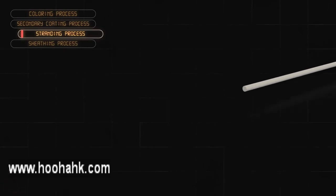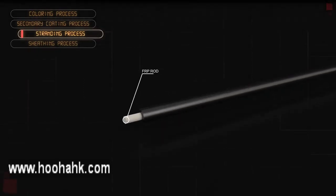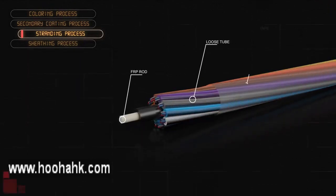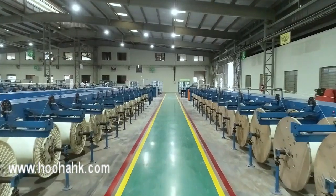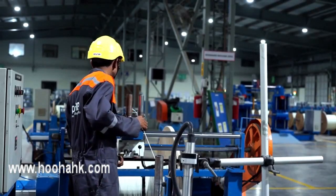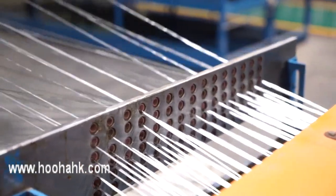The stranding process is used in the case of multi-tube designs. Here, the loose tubes of optical fiber cable are stranded in concentric layers around a central strength element — a fiber reinforced plastic rod, also known as an FRP rod. The company has an in-house production unit to manufacture these high-quality FRP rods at various diameters and specifications.